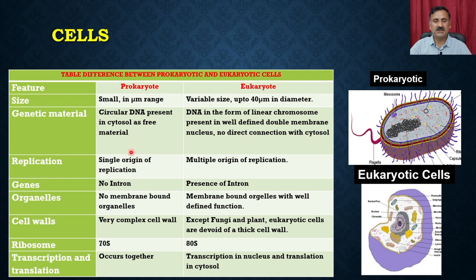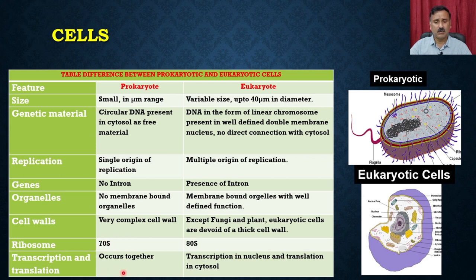In eukaryotes, the DNA is in the form of linear chromosomes enclosed within a well-defined double-membrane nucleus with no direct connection to the cytosol. Prokaryotes have a single origin of replication, whereas eukaryotes have multiple origins of replication. Prokaryotic genes do not contain introns, whereas eukaryotic genes do. Ribosomes are 70S in prokaryotes and 80S in eukaryotes. In prokaryotes, transcription and translation occur together, whereas in eukaryotes transcription occurs in the nucleus and translation in the cytosol.